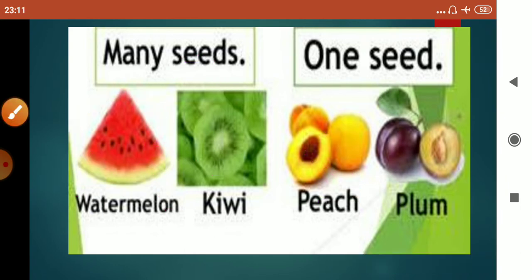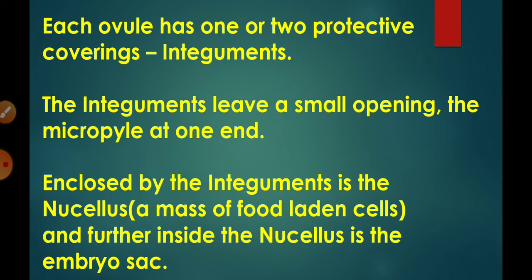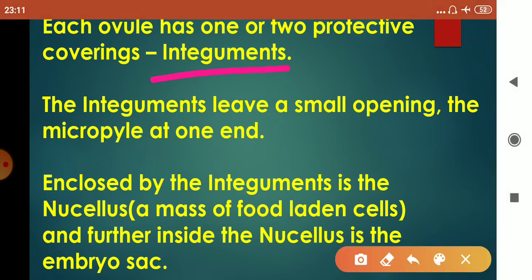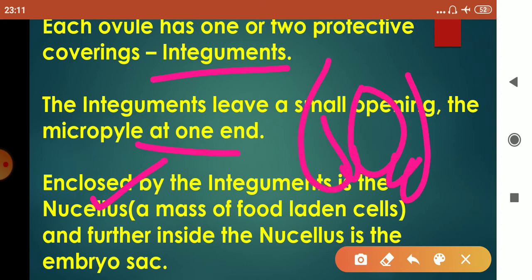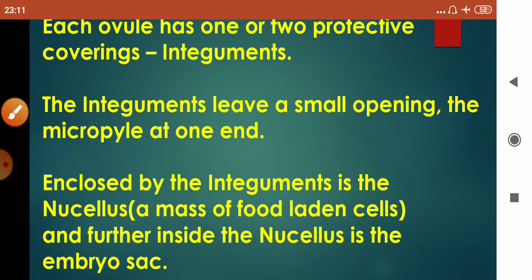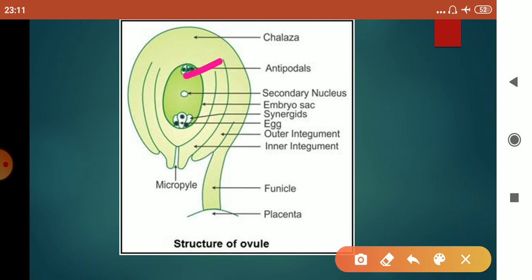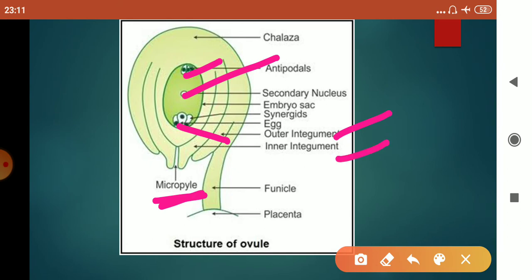Each ovule has one or two protective coverings called integuments. The integuments leave a small opening called the micropyle at one end. Enclosed by the integuments is the nucellus — a mass of food-laden cells that stores food providing nourishment. Inside the nucellus, the embryo sac is present. Inside the embryo sac: three antipodal cells at the top, three cells at the micropylar end, and two nuclei in the center called polar nuclei or secondary nuclei. The two integuments and the micropyle are also labeled here.